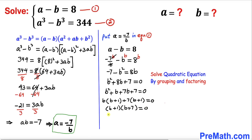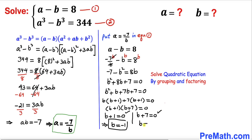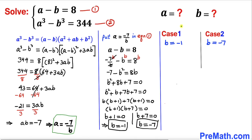We can write this as b plus 1 times b plus 7 equals 0. Separating the factors: b plus 1 equals 0 gives b equals negative 1, and b plus 7 equals 0 gives b equals negative 7. Now we consider two cases.